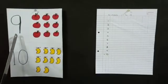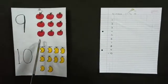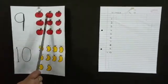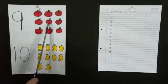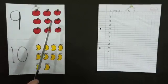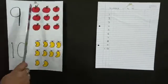Now this is number 9. How many apples are there? One, two, three, four, five, six, seven, eight, and nine. Nine apples.